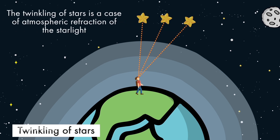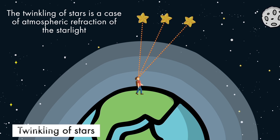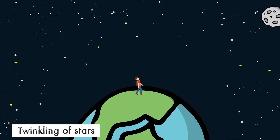This gives rise to the twinkling effect of these stars. So the twinkling effect is actually a case of the atmospheric refraction of starlight. The stars are not actually twinkling — they just appear to be twinkling in the sky due to the presence of our atmosphere and its various layers, and due to the refraction of starlight when it travels through these various layers.